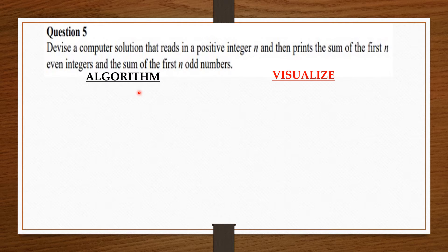Then from there we are going to create two empty variables: the first one to store the sum of the first even numbers and the second one to store the sum of the first odd numbers. Now the question says that our solution should read in a positive integer.